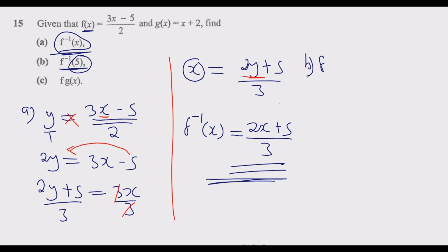This is part (b). So now whenever there is x, we put in a 5. That's the principle. So it's 2 times 5 plus 5 over 3. Then 2 times 5 is 10, plus 5 over 3, which is 15 over 3, which is equal to 5. So the answer there is 5.